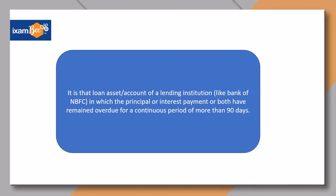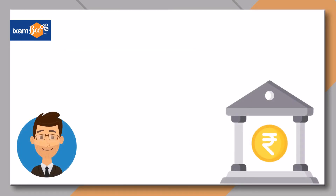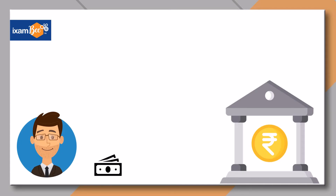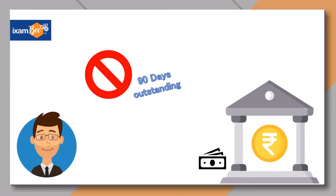Suppose you avail a loan from any bank — for that amount you need to pay EMIs regularly. However, when you cannot pay the EMI for 90 days, the loan account becomes a non-performing asset.